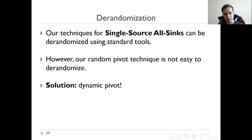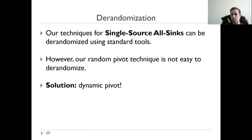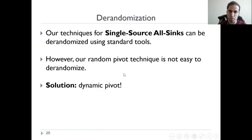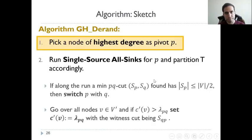This is the challenge we are overcoming in this paper, exclusive to this paper. Our techniques for single source can be derandomized using standard tools such as splitters. The issue is that the random pivot technique is not easy to derandomize generally, and this is where our dynamic pivot technique comes into play.